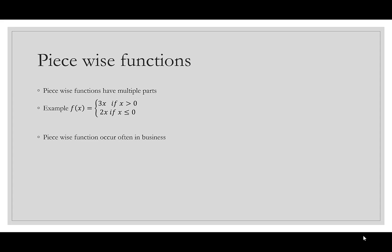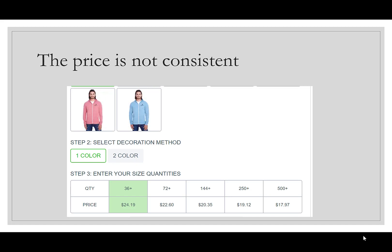Piecewise functions often occur in business, so I thought we should look at some examples. Here's one where you could order a hoodie online. Notice that the price is based on the quantity that you order. If you order 36 or more, you're paying $24.19. If you get to 72, the price drops to $22.60. If you order 144 or more, the price is $20.35.